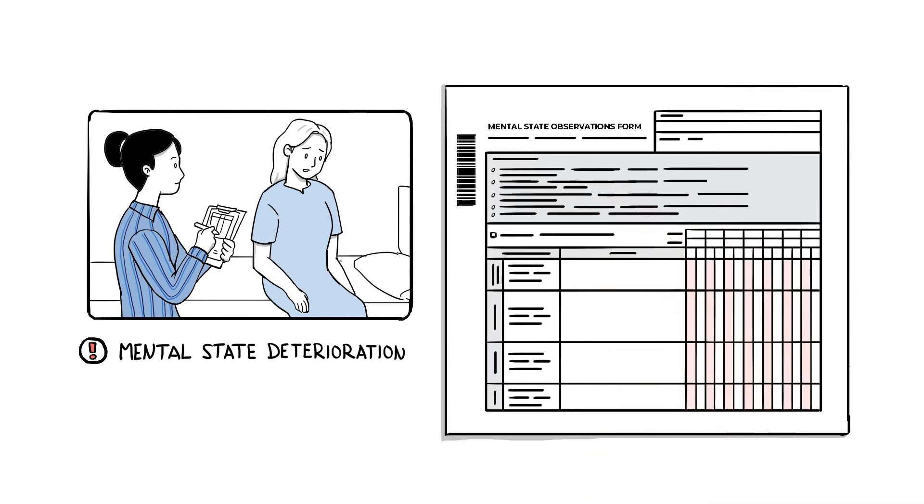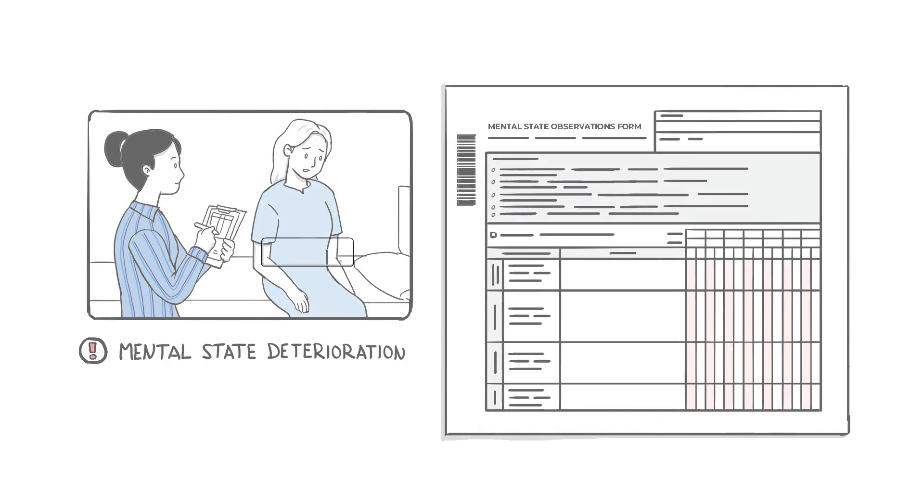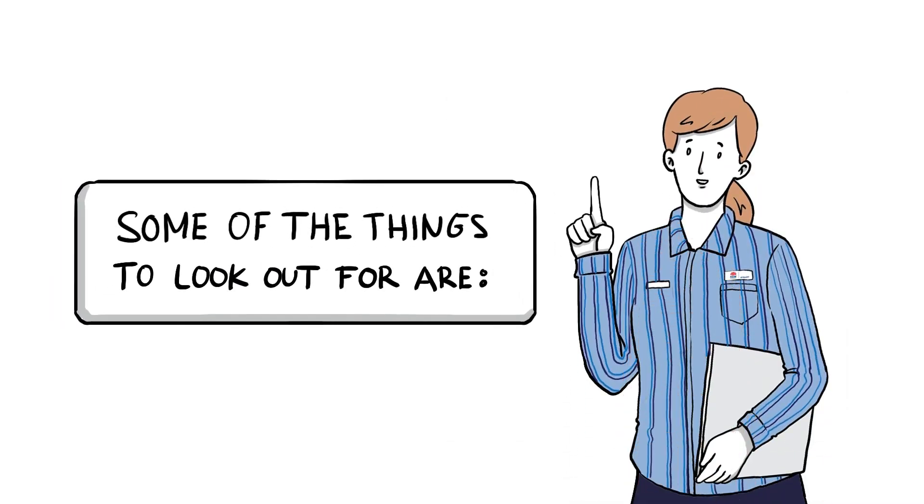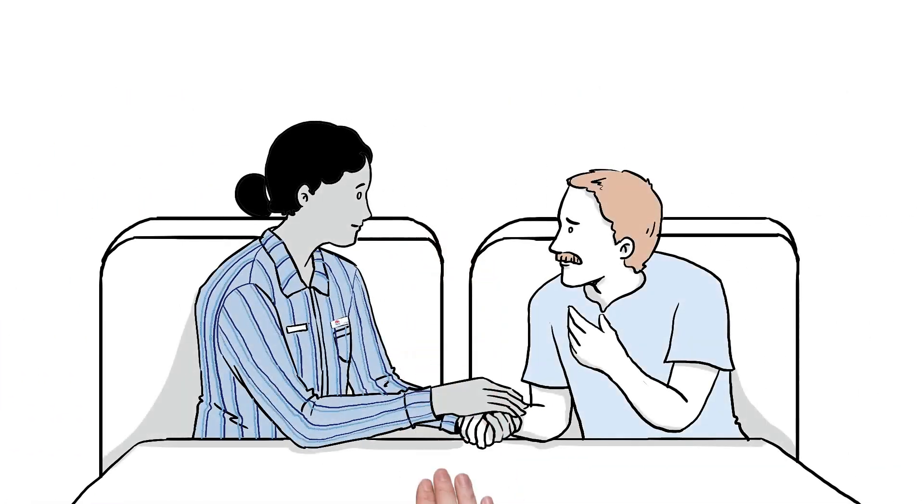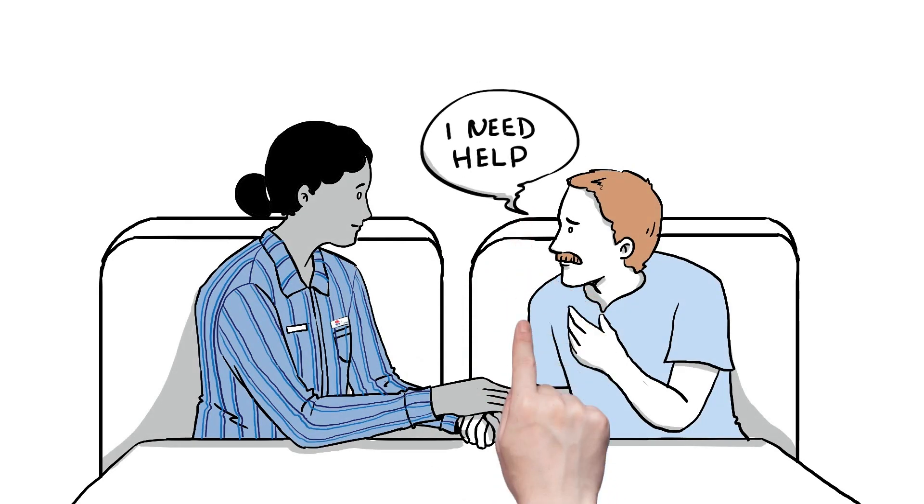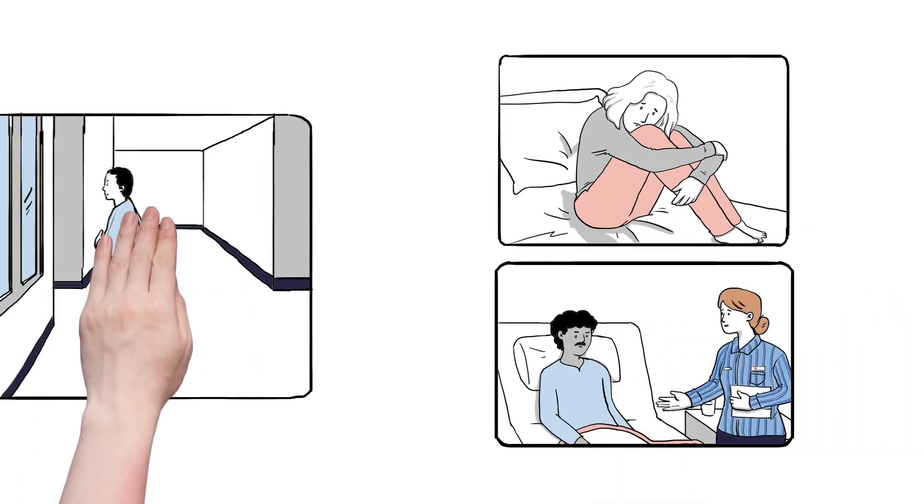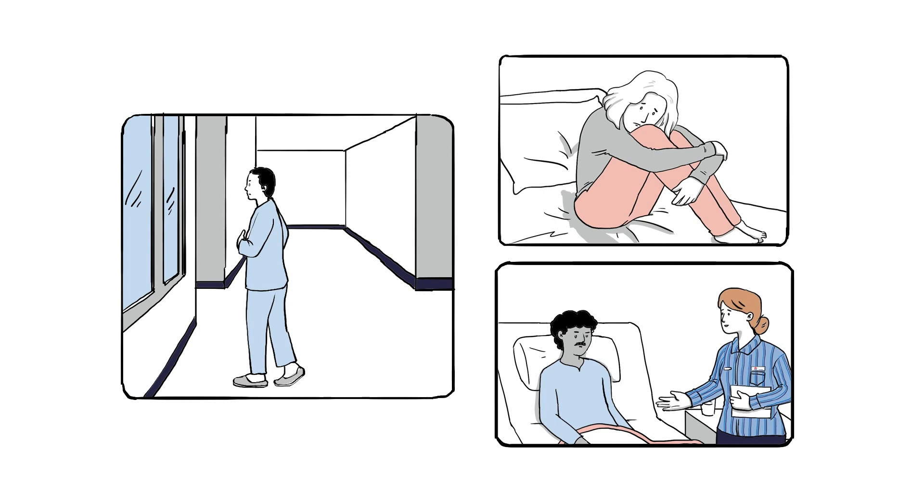Joe now receives a clinical review and is commenced on the mental state observation form. Some of the things to look out for are a reported change in mental state, such as the person telling you that things have changed and they are seeking help. A change in behavior, such as the person being out of character, pacing or wandering around and not following requests or instructions.